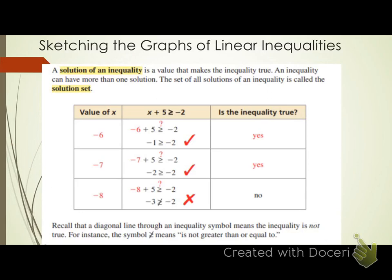Consider the inequality x + 5 ≥ −2. Plugging in x = −6 gives −1 ≥ −2, which is true, so −6 is a solution. Plugging in x = −7 gives −2 ≥ −2, which is also true because it meets the 'equal to' condition, so −7 is also a solution.